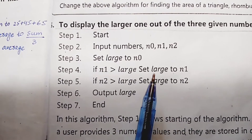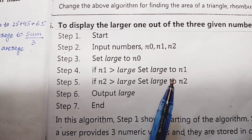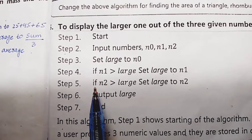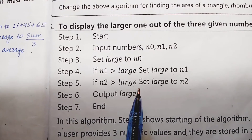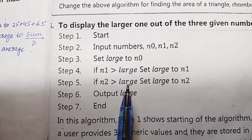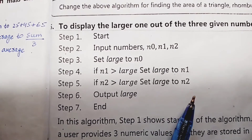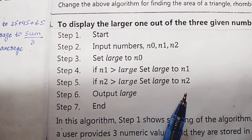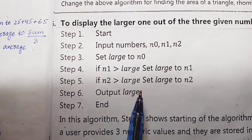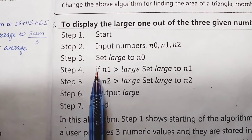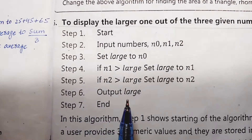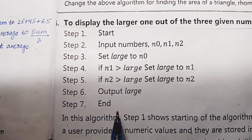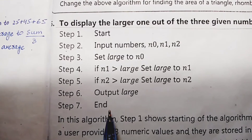If that condition is true, large becomes n1. If false, step number 5 checks another condition: if n2 is greater than large, then set large to n2. Whatever number is larger after steps 3, 4, and 5 will be displayed in step number 6 as output. Step number 7 is the end of the algorithm.